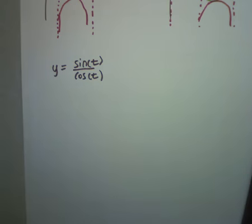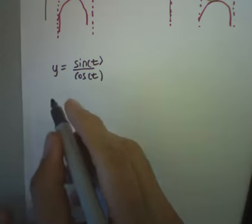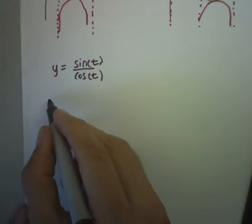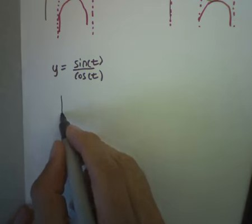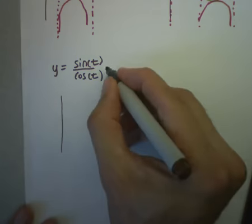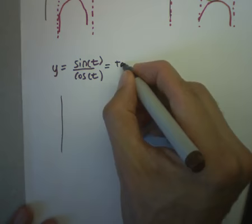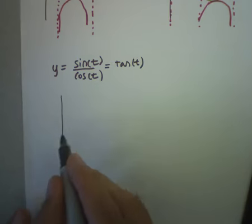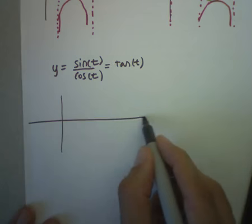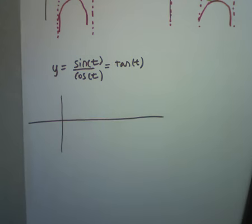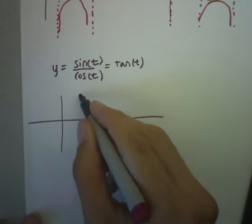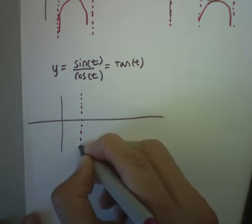But we'll make use of at least one fact: everywhere cosine is zero, tangent will be undefined. So cosine is zero at π/2, so let's just go ahead and put an asymptote in first, π/2 and at 3π/2.